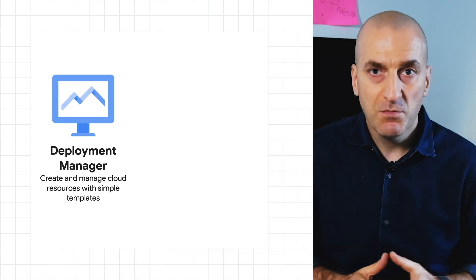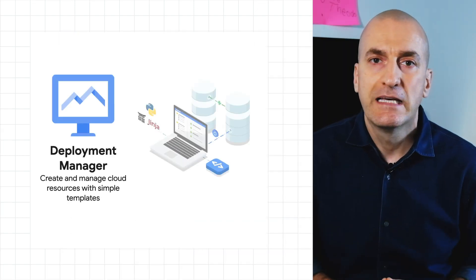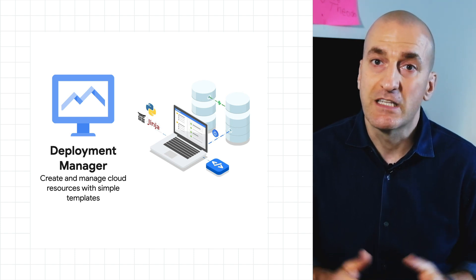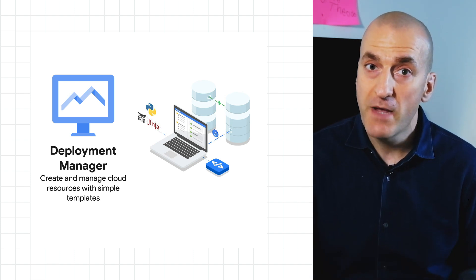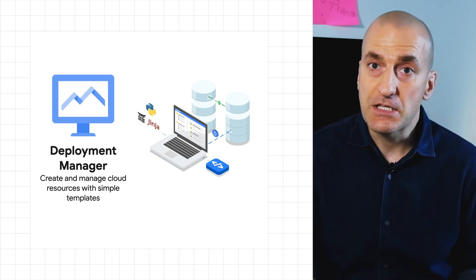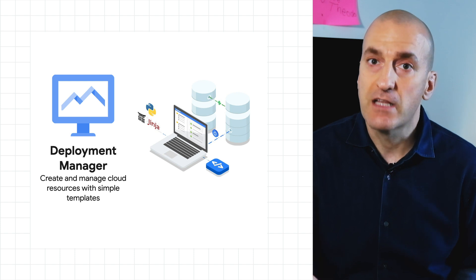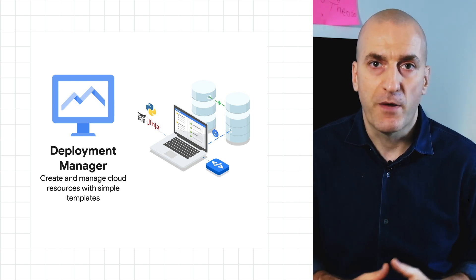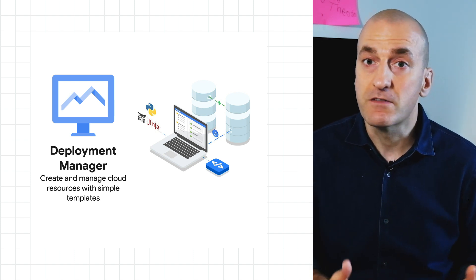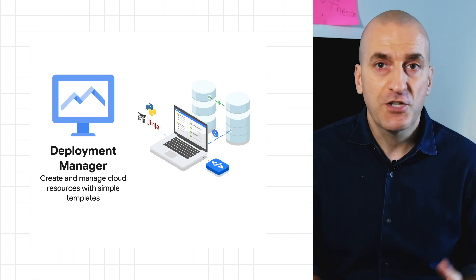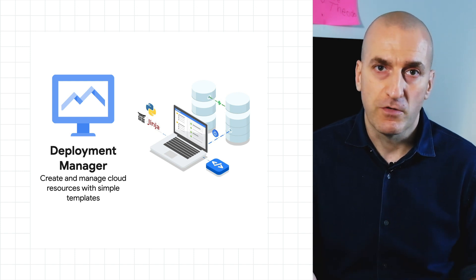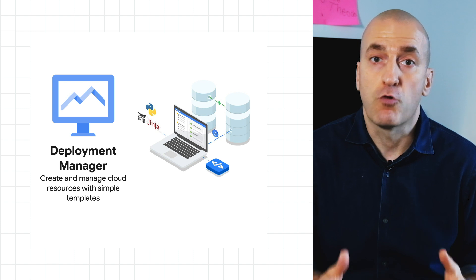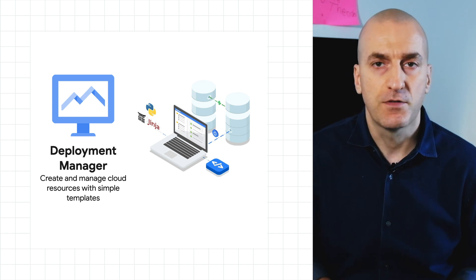Our second option is to use Cloud Deployment Manager. It allows you to specify all the resources needed for your application in a declarative format using YAML files, and then execute them using the gcloud command line tool. You can also use templates to parameterize the configuration for better reuse. Deployment Manager has full support for Google Cloud services, and the state is stored in the cloud.